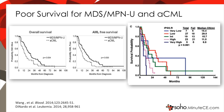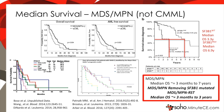For MDS-MPN-U and aCML, though little work has been done, median survival is poor, measured in months to years. Taken together, non-CMML MDS-MPN has a median survival of three months to seven years. If SF3B1-mutated MDS-MPN-RST is removed from that analysis, the median survival narrows to three months to three years.